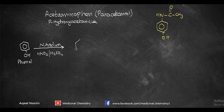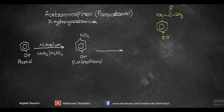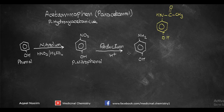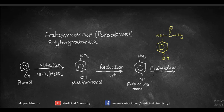As far as the synthesis is concerned, the starting compound for the synthesis of paracetamol is phenol, which undergoes nitration with nitric acid and H2SO4 to ultimately form para-nitrophenol. This upon reduction gives us an intermediate compound: para-aminophenol.